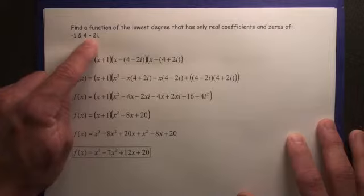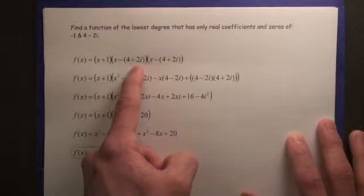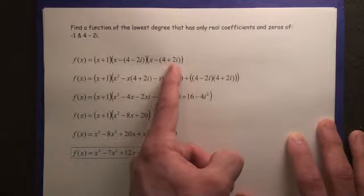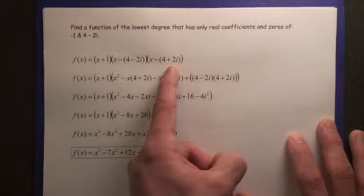If 4 minus 2i is a zero, then we know that x minus 4 minus 2i is a zero, and x minus 4 plus 2i is a zero, hence the complex conjugate zeros theorem.